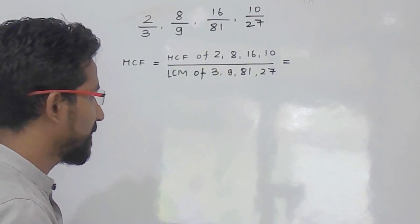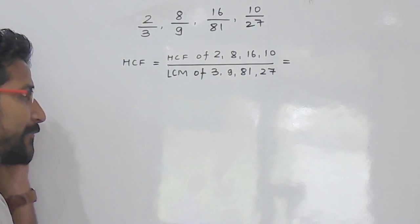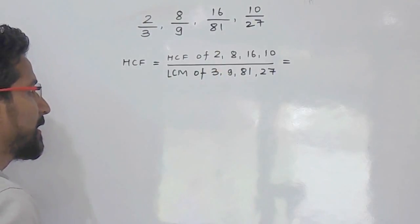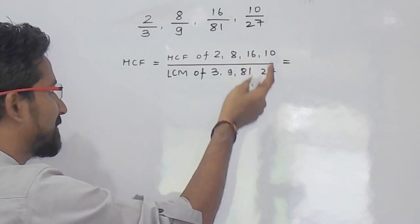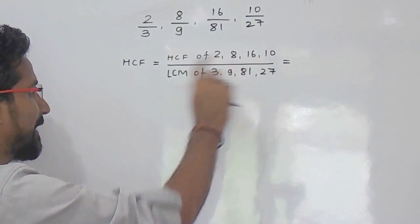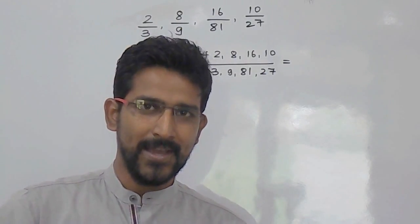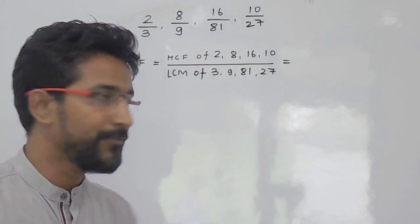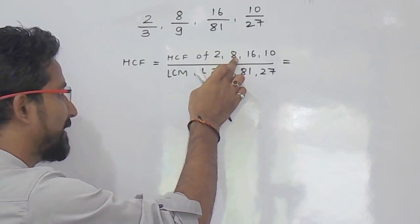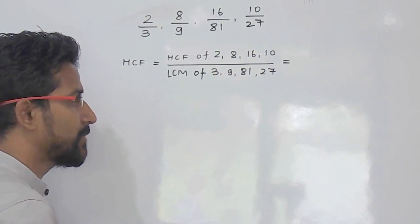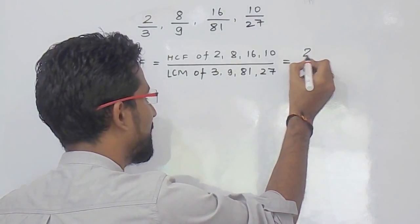As we have already seen the trick for finding HCF, we look at the least difference among the given numbers. The difference between 16 and 10 is 6, between 10 and 8 is 2, and between 8 and 2 is 6. The least difference is 2. We check whether 2 is a divisor of all these numbers: 2, 8, 16, and 10 are all divisible by 2. So the HCF of the numerators is 2.